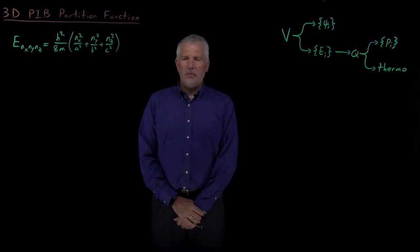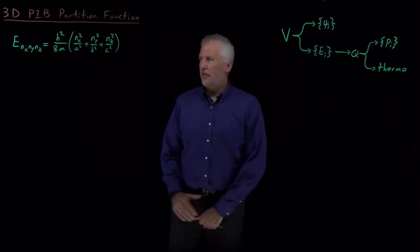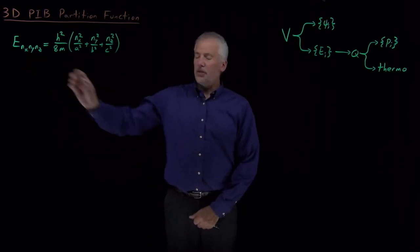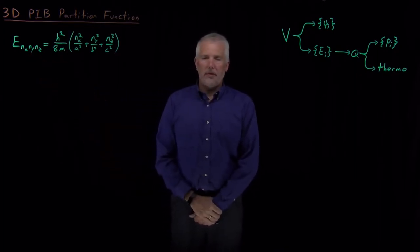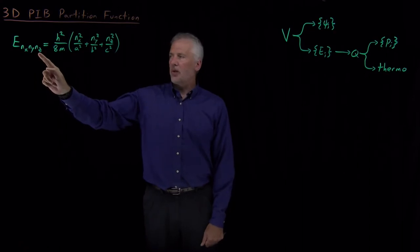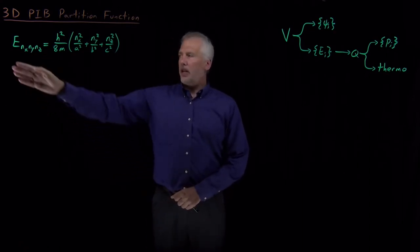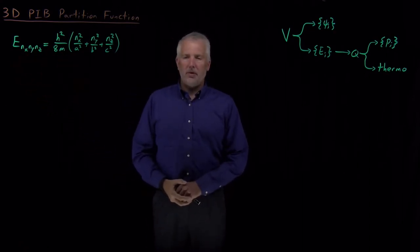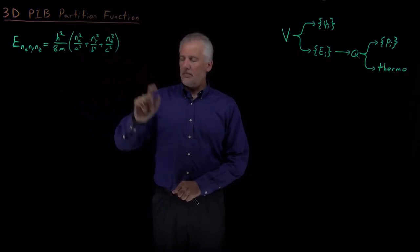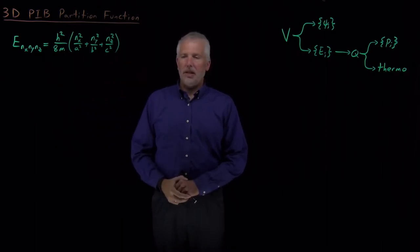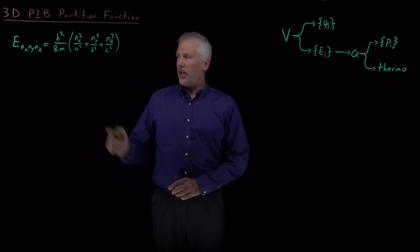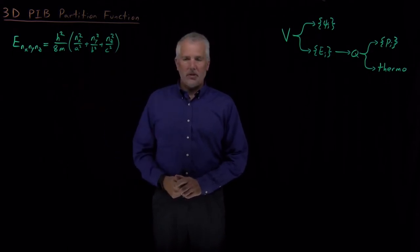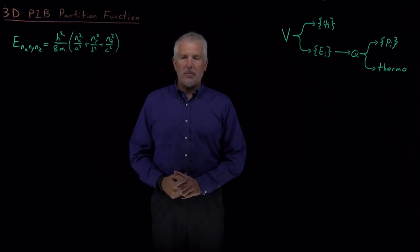Okay, so for the three-dimensional particle in a box, we've seen that the energy levels are determined by three quantum numbers. If we have three different positive integers, n sub x, n sub y, n sub z, then the energy of a particle in that state is given by this expression here. What that means is we're now in a position where we can use those energies to calculate partition functions and then eventually some thermodynamic properties.